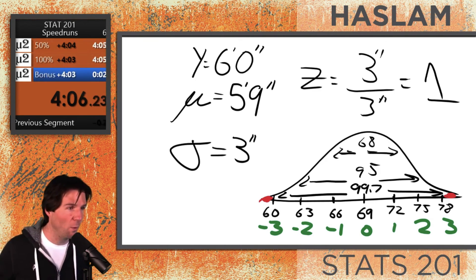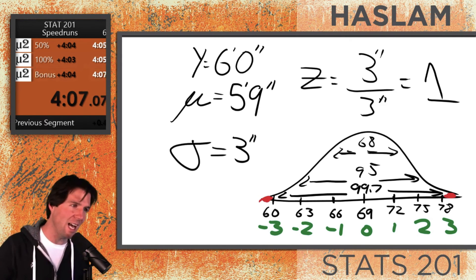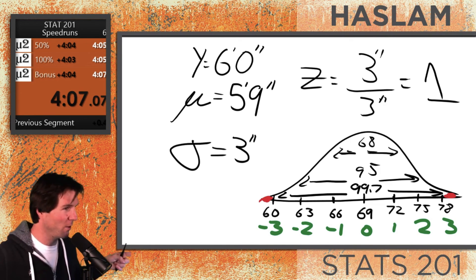And that does it for the speedrun right here. Under five minutes explaining z-scores, and we tagged on the empirical rule and we drew the normal model.